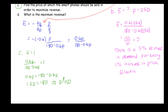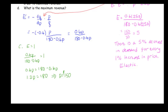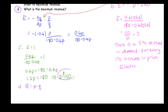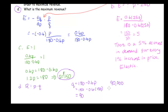In part D, we find the actual maximum revenue. Revenue equals price times quantity. We know the price is $150, so we find Q: Q equals 180 minus 0.6 times 150, which gives Q equals 90. Since Q is in thousands, that's 90,000 smartphones. Revenue is 150 times 90,000, giving a maximum revenue of $13,500,000.